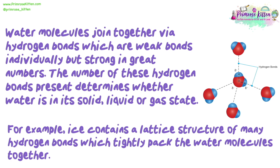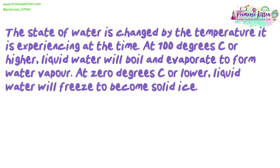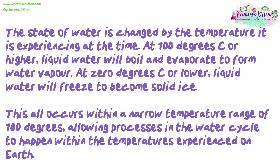For example, ice contains a lattice structure of many hydrogen bonds which tightly pack the water molecules together. The state of water is changed by the temperature it is experiencing at the time. At 100 degrees Celsius or higher, liquid water will boil and evaporate to form water vapour. At 0 degrees Celsius or lower, liquid water will freeze to become solid ice. This all occurs within the narrow temperature range of 100 degrees, allowing processes in the water cycle to happen within the temperatures experienced on earth.